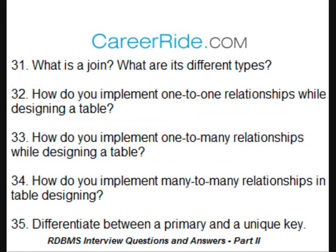What is a join? What are its different types? Joins in a query explain the relationship between different tables. They allow the selection of data from a table based on the data from another table. The different types of joins are inner join, outer join, and cross join.